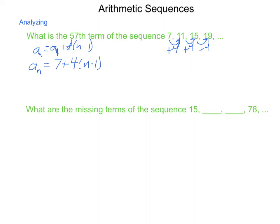So to find a sub 57, the 57th term, we're going 7 plus 4 times 57 minus 1. 57 minus 1 is 56, 56 times 4 is 224 plus 7, we get the 57th term at 231. So a sub 57 is 231.